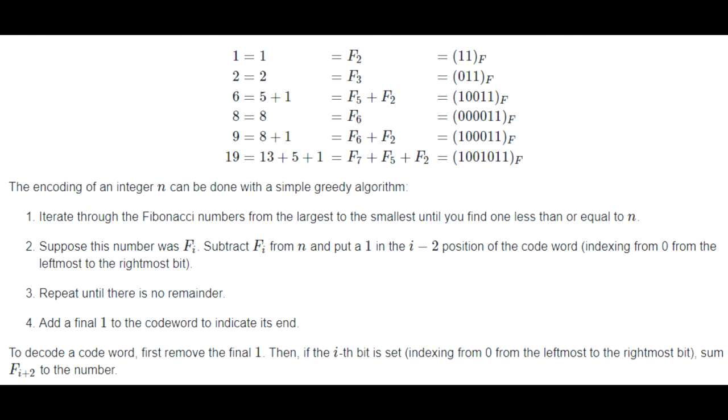That's the binary index from leftmost to rightmost bit. And then we're just going to keep repeating this until there is no remainder. At the end we add a one to the final code word.